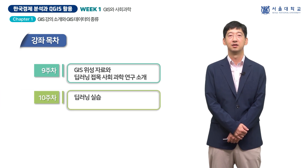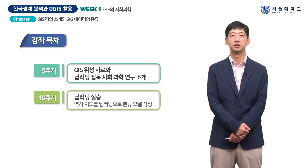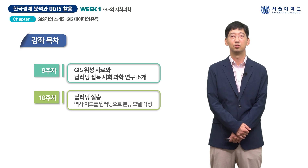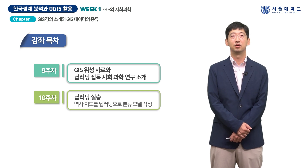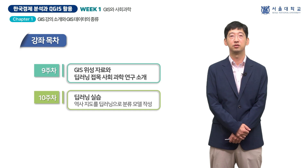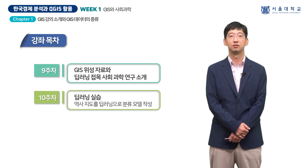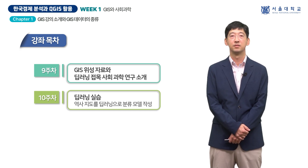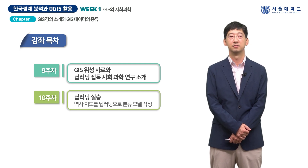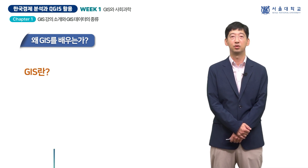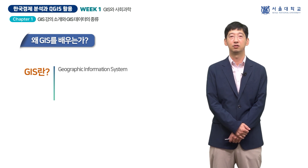마지막으로 10주차에는 영상 처리에 특화된 딥러닝 실습을 진행합니다. 한국의 1970년대 지형도를 바탕으로 사람이 사는 지역과 살지 않는 지역을 예측하는 딥러닝 모델을 직접 만들어봅니다. 기존에는 딥러닝을 위해 전산 자원과 코딩 환경 준비에 많은 시간과 비용이 소요되었는데, 구글에서 제공하는 콜랩이라는 웹 서비스를 이용해서 손쉽게 딥러닝 실습을 할 수 있습니다. 본 강좌에서는 QGIS라는 오픈소스 프로그램을 활용한 실습을 통해 다양한 형태로 GIS 데이터를 다뤄볼 예정입니다.